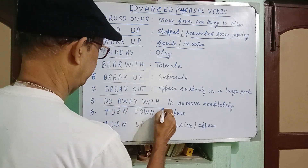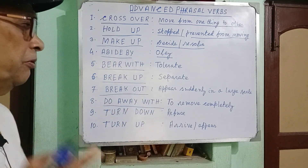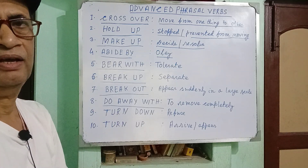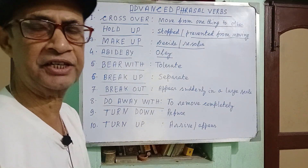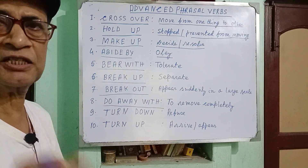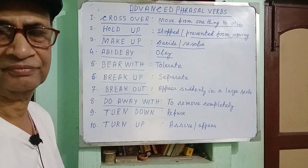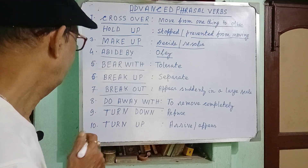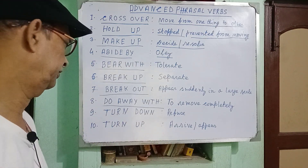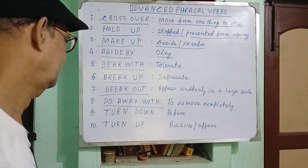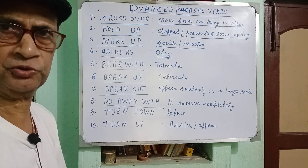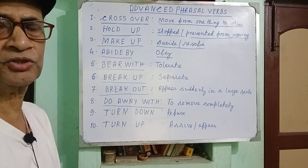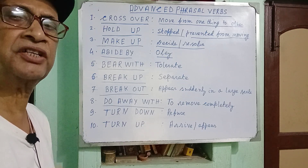'Do away with' means to remove completely. For example, 'Dowry system is a curse to human society; it must be done away with.' The next phrasal verb is 'turn down,' which means to refuse. For example, 'I made a proposal to him, but it was instantly turned down' — that is the passive form.